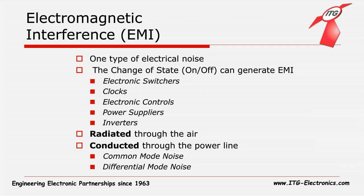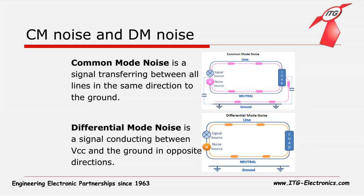The EMI noise can be either radiated through the air or conducted through the power line, which includes common mode noise and differential mode noise. Common mode noise is a signal transferring between all the lines in the same direction to the ground in a circuit. Differential mode noise is a signal conducting between the lines and the ground in opposite directions.